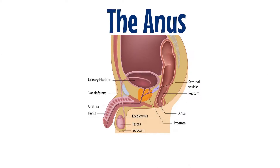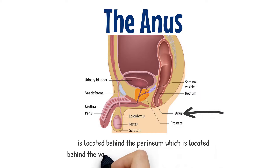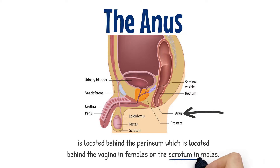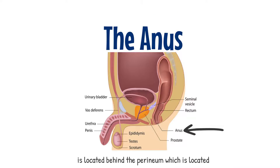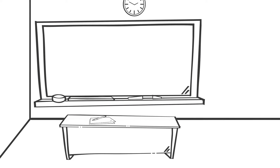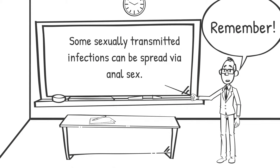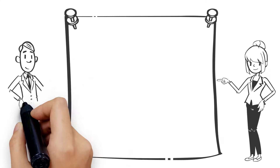It is located behind the perineum, which is located behind the vagina in females or the scrotum in males. Some sexually transmitted infections, including HIV-AIDS and anal warts, can be spread via anal sex.